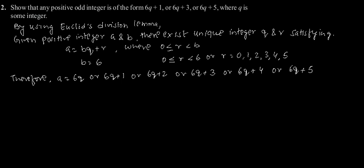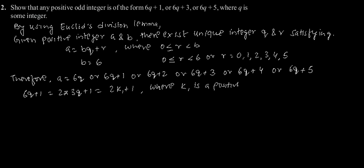Considering 6q plus 1: this can be written as 2 into (3q) plus 1. Let 3q equal k1, so this becomes 2k1 plus 1, where k1 is a positive integer. This is of the form 2k plus 1, which is odd.